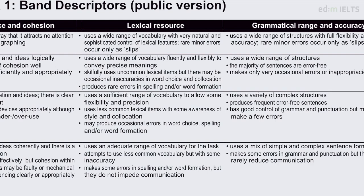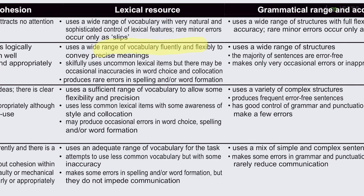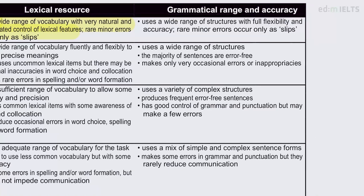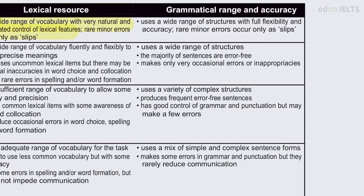For lexical resource, 'wide range of vocabulary used fluently and flexibly to convey precise meanings' — yeah, I think so. Eight is still very high, but for me it would need to be slightly more natural and sophisticated to get that 9 score. I would just personally develop it slightly more and maybe give a bit more detail. My word count might be slightly higher, as it tends to be for ones that do get 9, which is very rare.